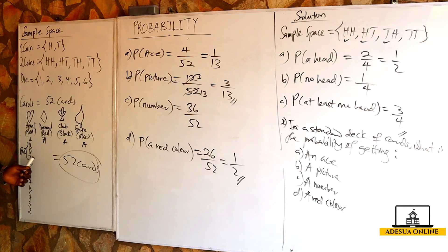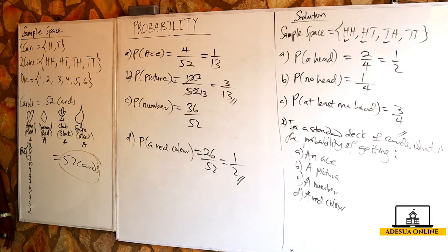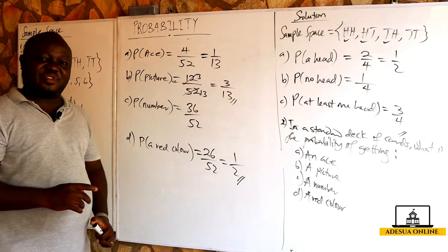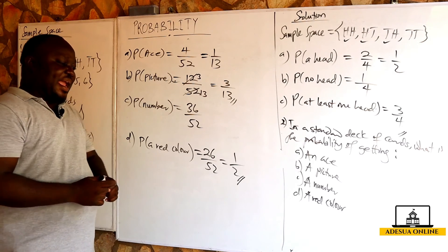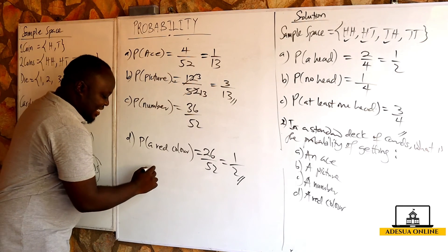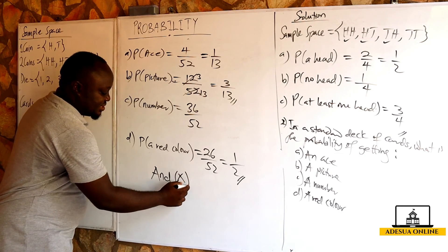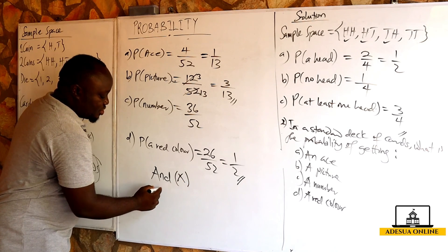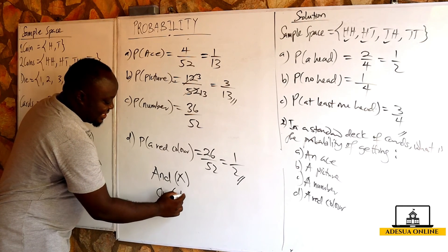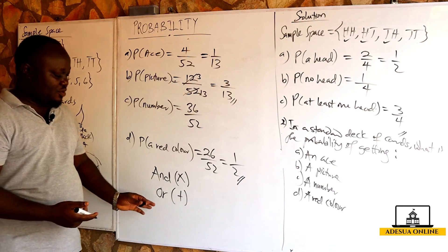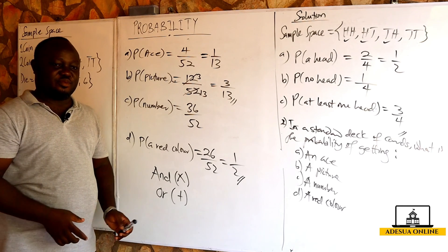We can also take a coin into consideration, but let's keep this in mind: in probability, when we say 'AND' this means multiplication, and when we say 'OR' this means addition. Let's take an example of this.